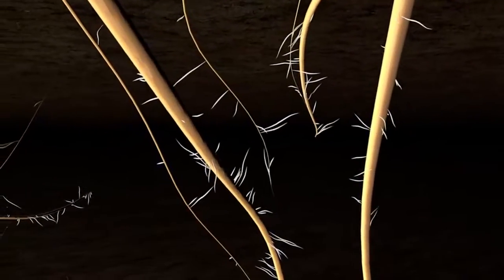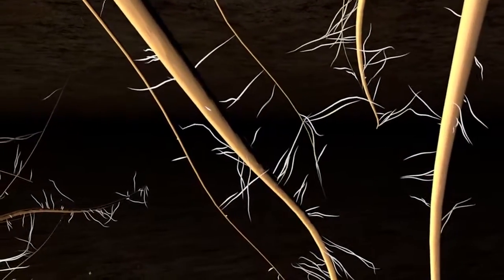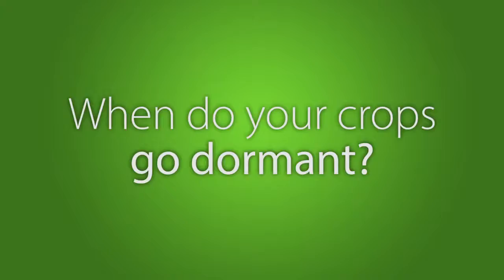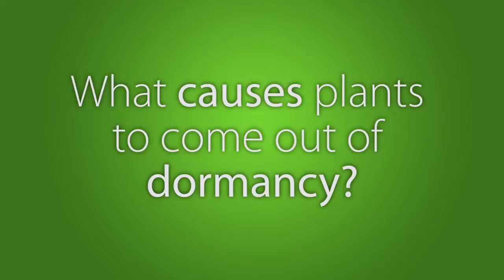Root flushing, an aspect of root development that is not yet fully understood, is also difficult to measure and predict without clear observation. When do your crops go dormant? What causes plants to come out of dormancy?